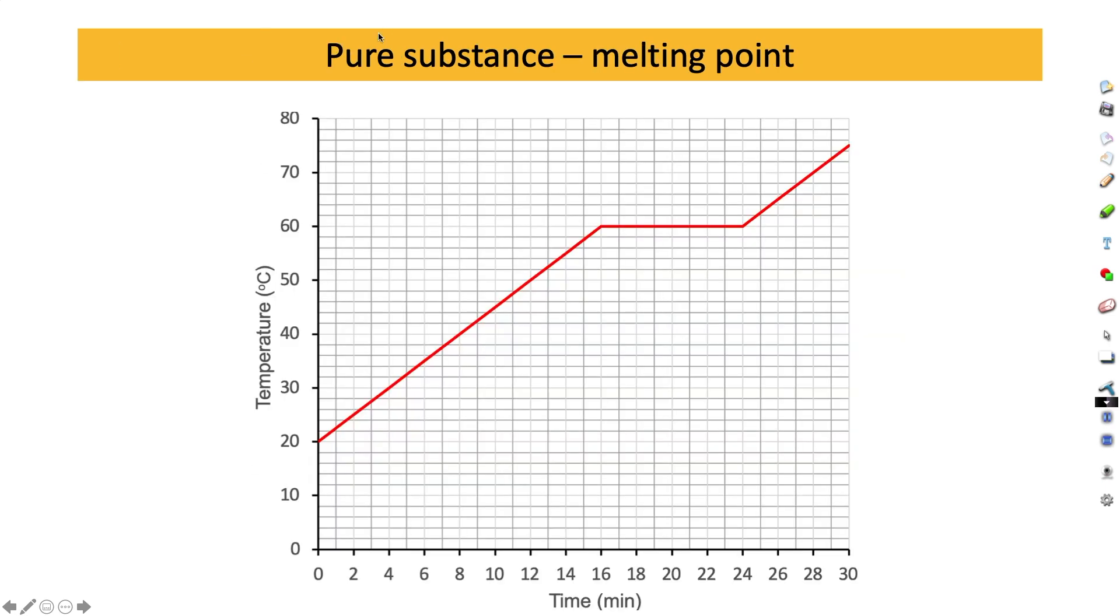You can work out whether a substance is pure or not by looking at a graph of its melting or boiling point. You can see here we've got temperature along the side and time along the bottom. If we heated a substance up over time, for a pure substance you would see a flat part on the graph like this region here. At this point here the substance is changing state, so any horizontal line on a heating or cooling curve represents a change of state. And when the substance is pure, that will be an exact horizontal line at a particular temperature, so in this case 60 degrees where the change of state is happening.